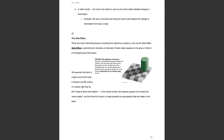Number 23: the Gleb effect. There are interesting illusions resulting from lightness constancy, such as the Gleb effect — a phenomenon whereby an intensely lit black object appears to be gray or white in a homogeneously dark space. We assume there is a light source casting a shadow over square B, putting it in darker light than A. In the whole context, the squares appear to be nearly the same shade, even though objectively B is darker than A. The brain assumes that if the shadow weren't there, B would surely be the same shade as A. The brain does this automatically — it's the result of assumptions we make about lighting context.